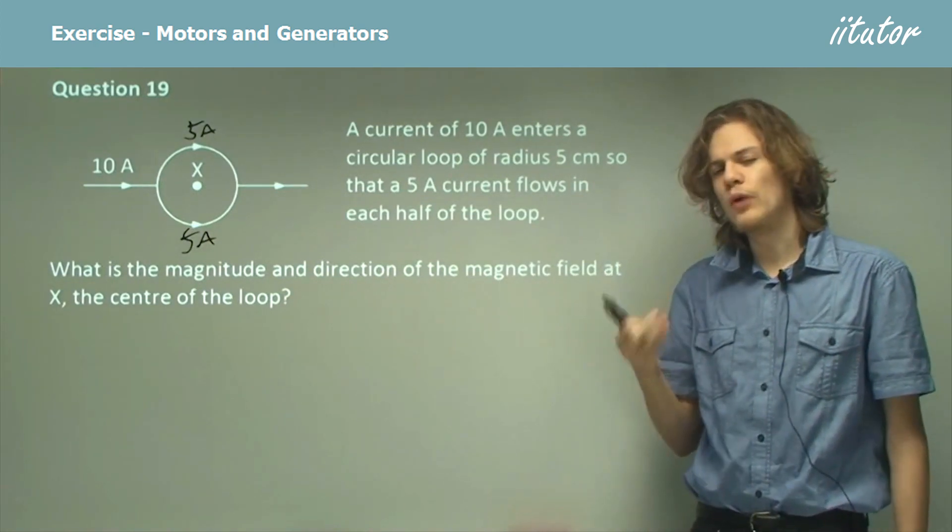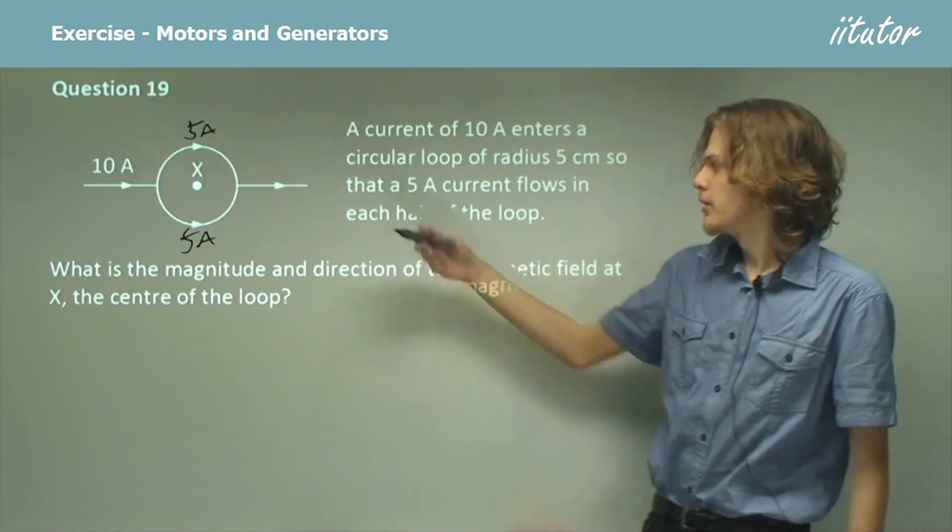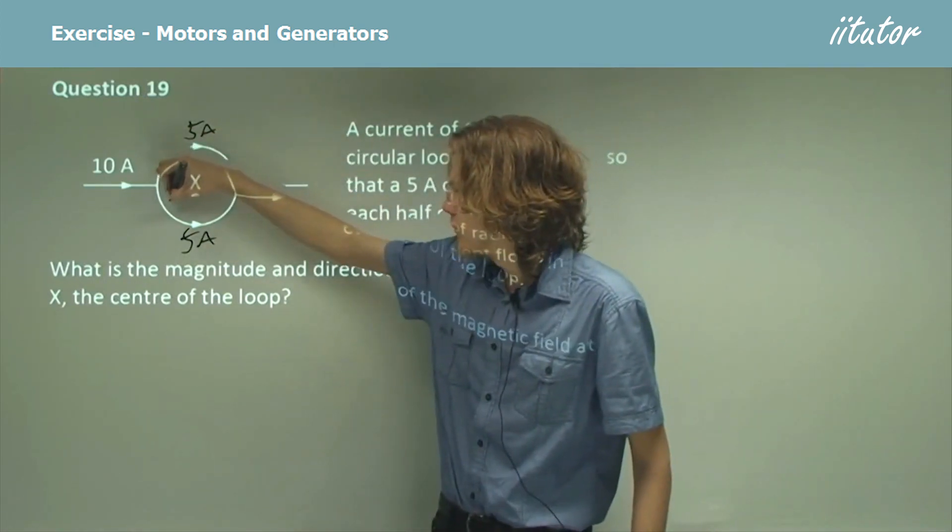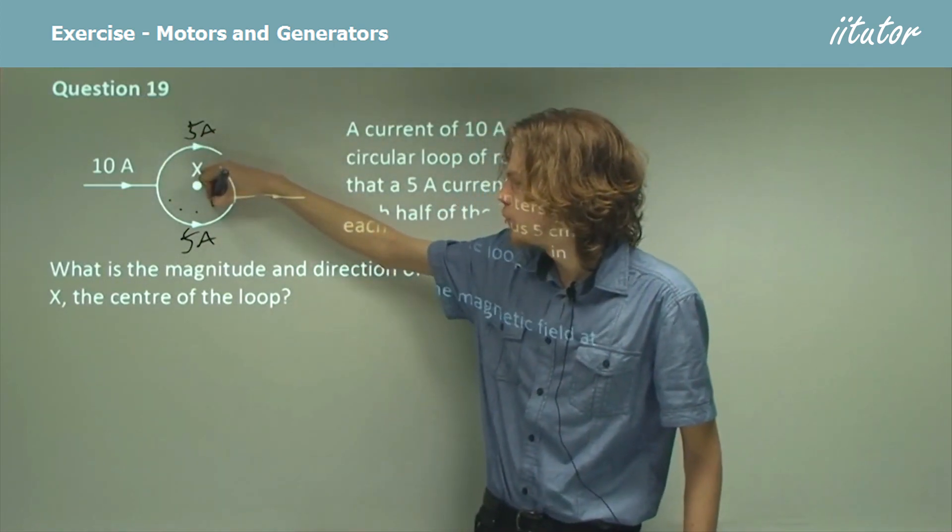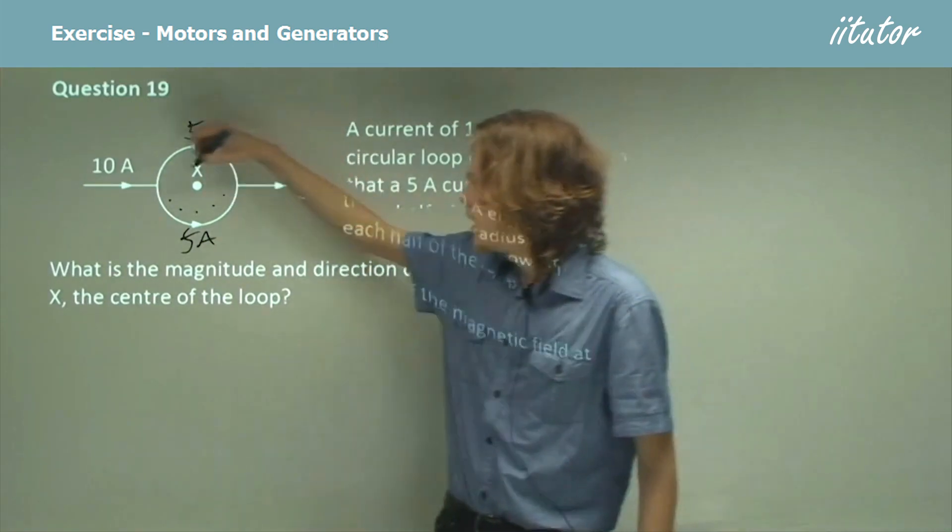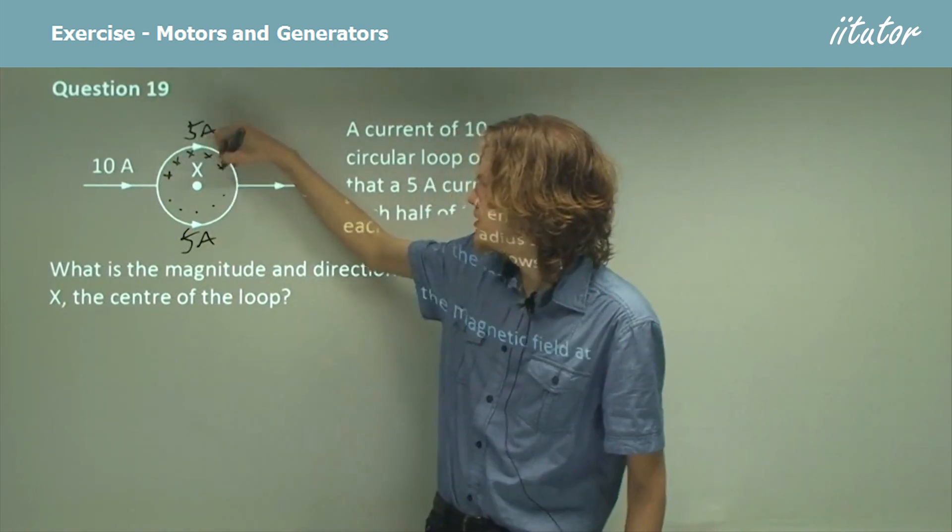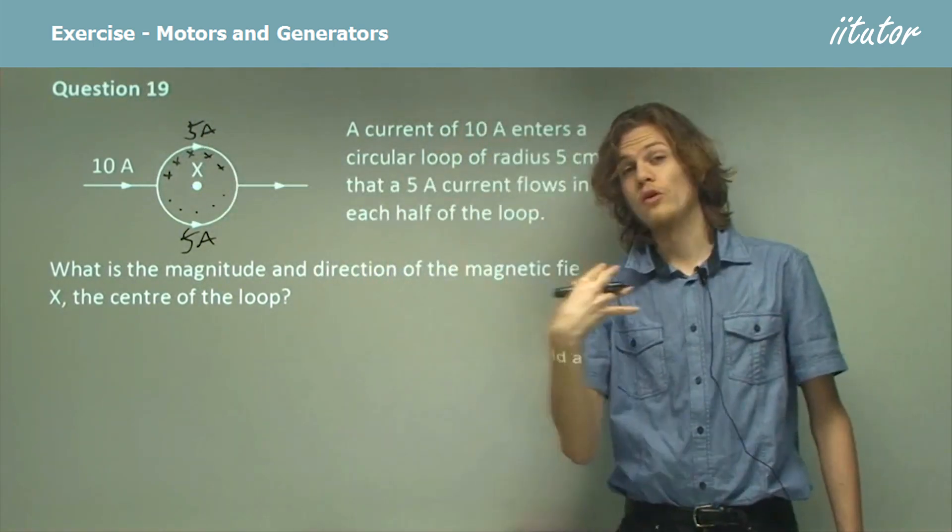So let's figure out which direction the magnetic fields will be moving in. We can use the right-hand rule to see that for the bottom wire, the magnetic field produced will be out of the image, towards you. And for the other side, it will be into the image, toward me.